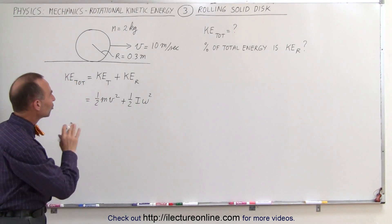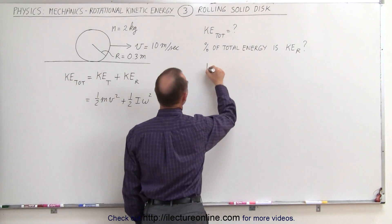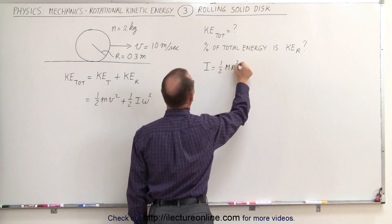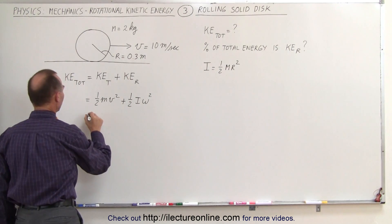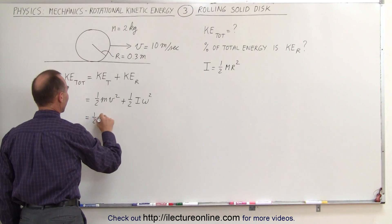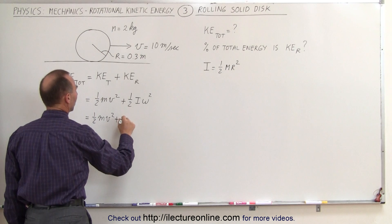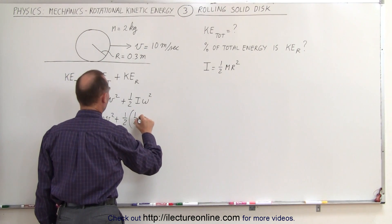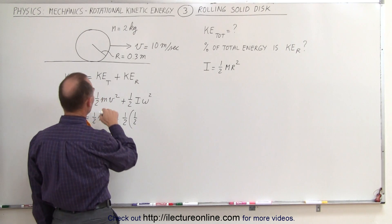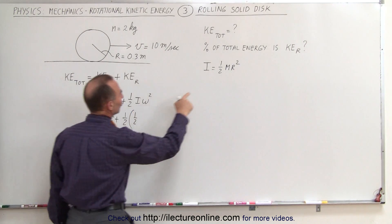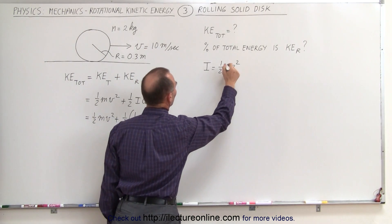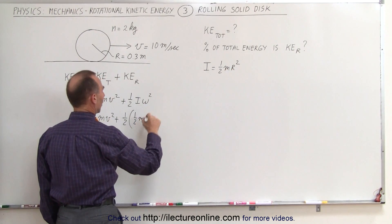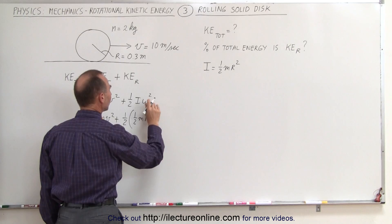Now since we're dealing with a solid disk, I is therefore equal to one half the mass times the radius squared. If we plug that in here we get the following: one half mv squared plus one half times one half mv squared times omega squared.